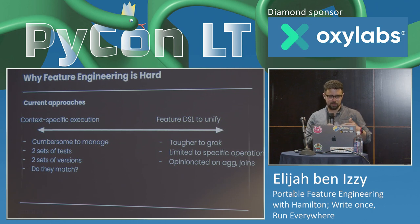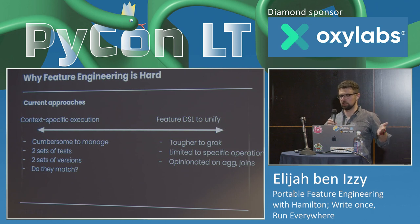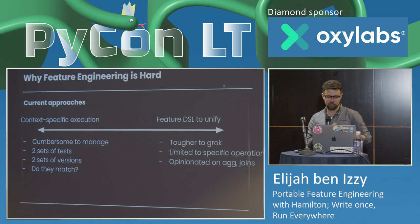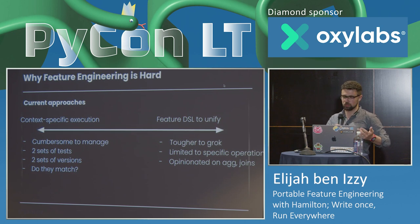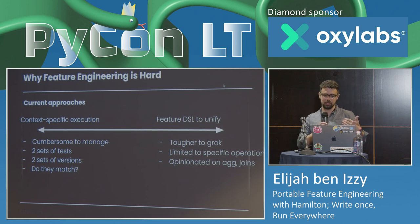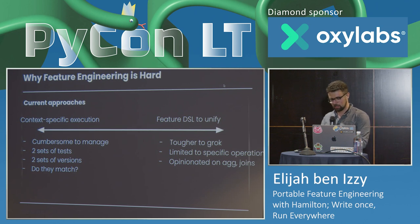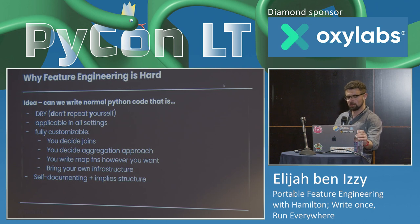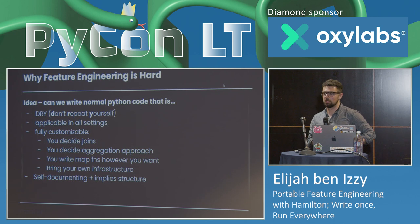The current state-of-the-art falls into two extremes. On one side, there's context-specific execution — writing one set of code for each context. It's cumbersome to manage two sets of tests and two versions of features, and the big question is: do they match? On the other hand, there are new feature DSLs to unify it, but they're limited and opinionated on aggregations and joins. Hamilton allows you to be right in the middle — write everything using normal Python code and normal Python functions, make it DRY, applicable in all settings, fully customizable, and self-documenting.